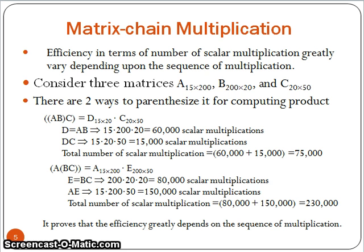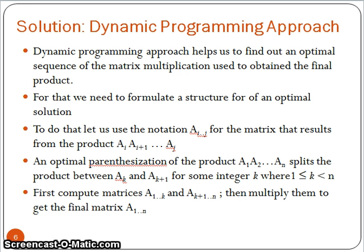So we notice that efficiency greatly depends on the sequence of multiplications. That is why whenever we are solving any real-life problem that involves a series of matrix multiplications, we need to find out an optimal sequence of the matrices to follow in order to get better performance. In that regard, we may note that matrix multiplication is associative in nature but it is not commutative. That means we cannot reorder the matrices — the sequence of a_i and a_j cannot be interchanged. So to get a better solution, we can follow the dynamic programming approach.